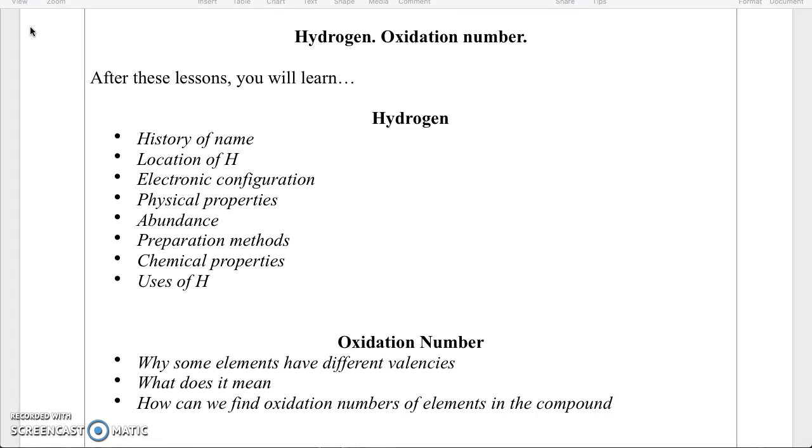In our second video lesson, we will talk about oxidation number. Firstly, why some elements have different valences? What does it mean oxidation number? How can we find oxidation numbers of elements in the compound?